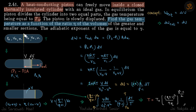A heat-conducting piston divides this vessel into two equal parts. Let's say both sides have pressure P₀, volume V₀, and N number of moles, with temperature T₀ initially. We need to find the gas temperature as a function of the ratio Eta of the volumes — that is, when the piston is moved and the ratio of the two parts of the vessel is Eta.